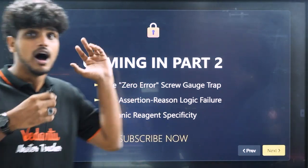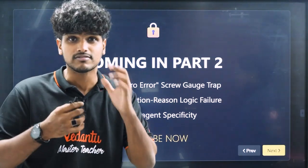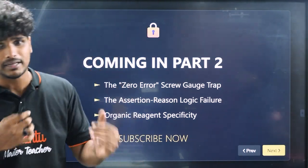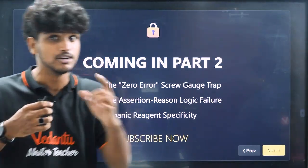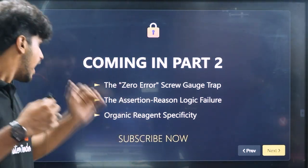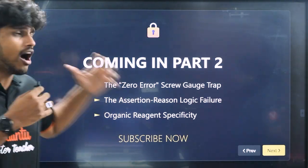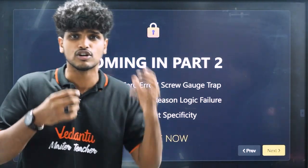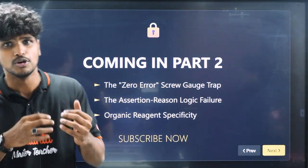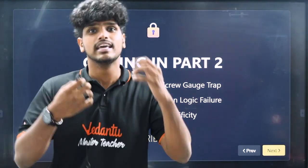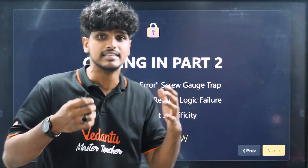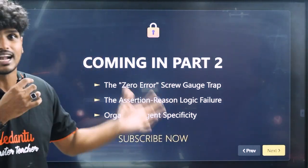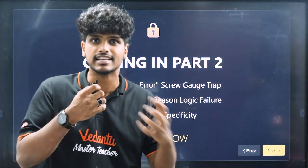In assertion-reason questions, the trap is that you might not know specifics about the topic. If you don't know the content deeply, you can still identify what type of trap is being set, which helps you answer strategically.